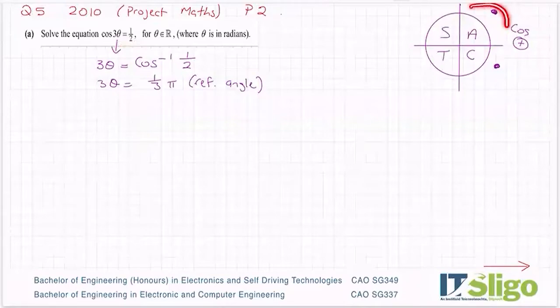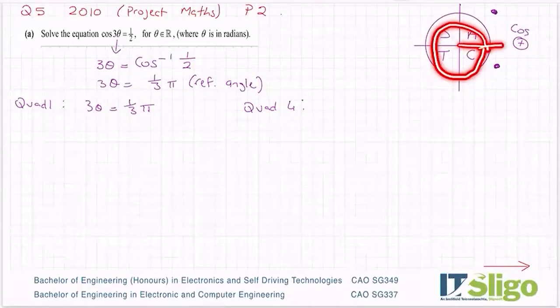These are the two quadrants where we will get a value of 1/2 when we get cos(3θ). When you're in the first quadrant, it's always with respect to the horizontal axis, so it's effectively zero degrees plus your reference angle. So for quadrant one, 3θ = π/3, that's your reference angle. For quadrant four, it's always with respect to the positive sense of the x-axis, so it's all the way around to 2π minus your reference angle.